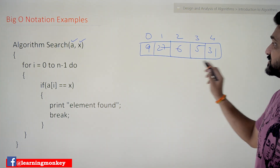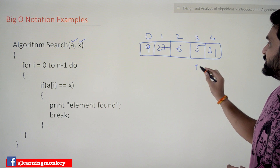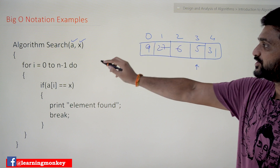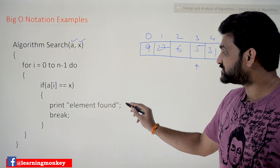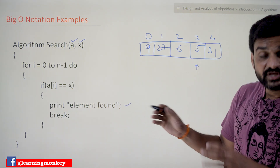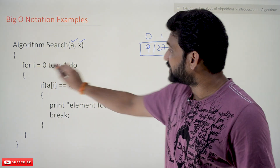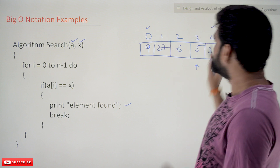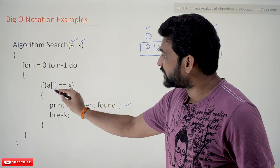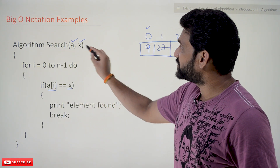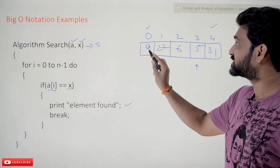For example, if you take this array, we are going to find for a particular element. If you want to find for five, this algorithm is going to say that if element five is there in this array, it will say 'element found.' That is the job done by this algorithm. This for loop is going to start from position zero until the end — n minus one, which is four. Every time it is going to check the value of A[i] with X. For example, if X equals five, in the first iteration nine is compared with five.